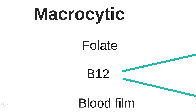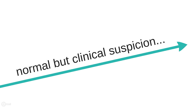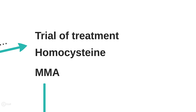B12 and folate levels are very useful in macrocytic anemia. However, be aware that the test of B12 isn't perfect, and many patients who truly have a B12 deficiency will have apparently normal B12 levels on the labs. Therefore, in patients where you suspect B12 deficiency but have a normal B12 level, you should consider a trial of therapy or second-line tests such as serum homocysteine or methylmalonic acid if they're available.